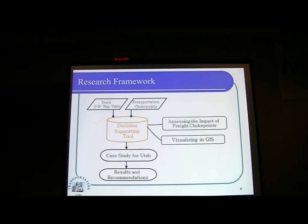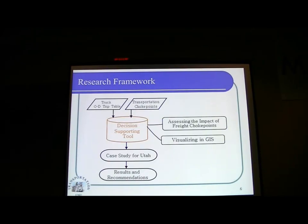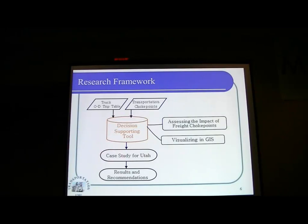You can see these are the inputs needed for the decision support system. There are two main inputs: one is the truck OD table, which represents the demand for trucks — specifically for Utah — and the other is the transportation network, which is input through the decision support system. Together, this provides the assessment framework and visualization in the GIS.